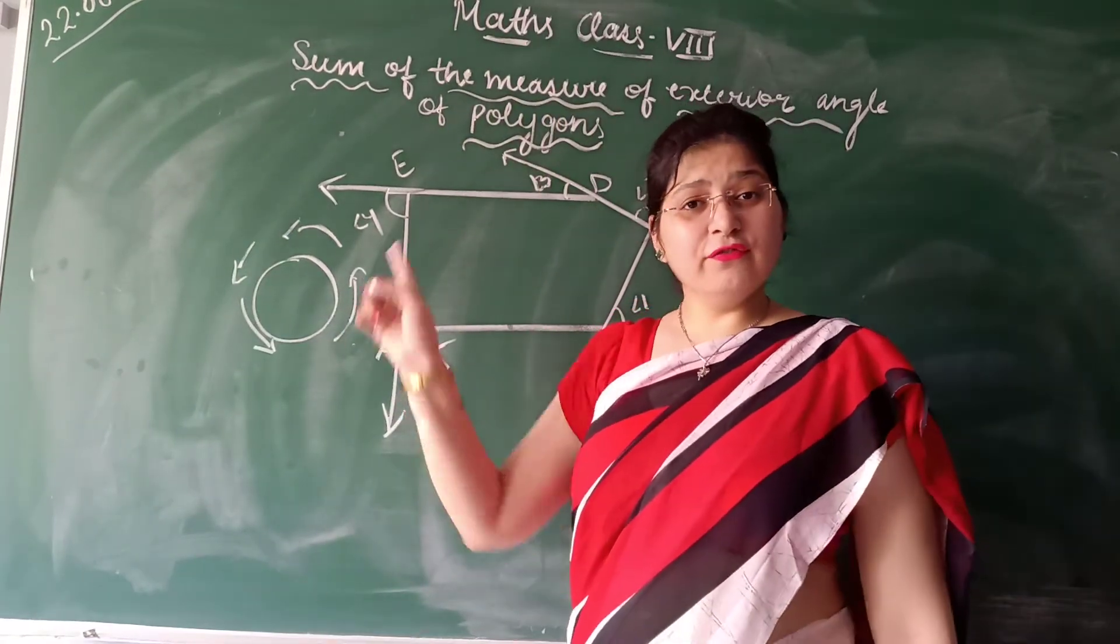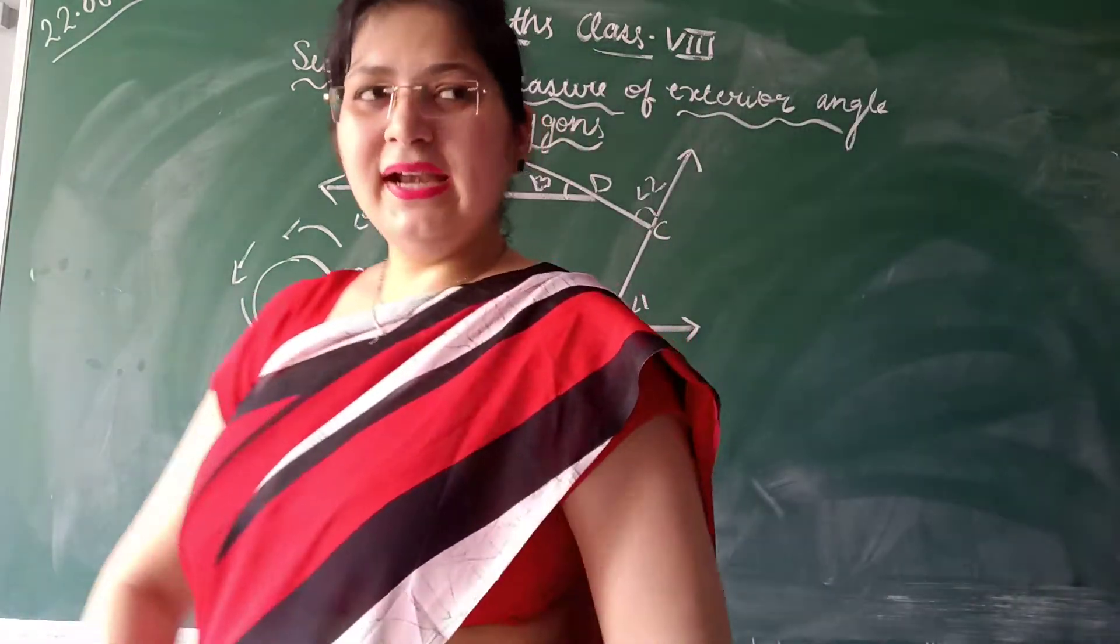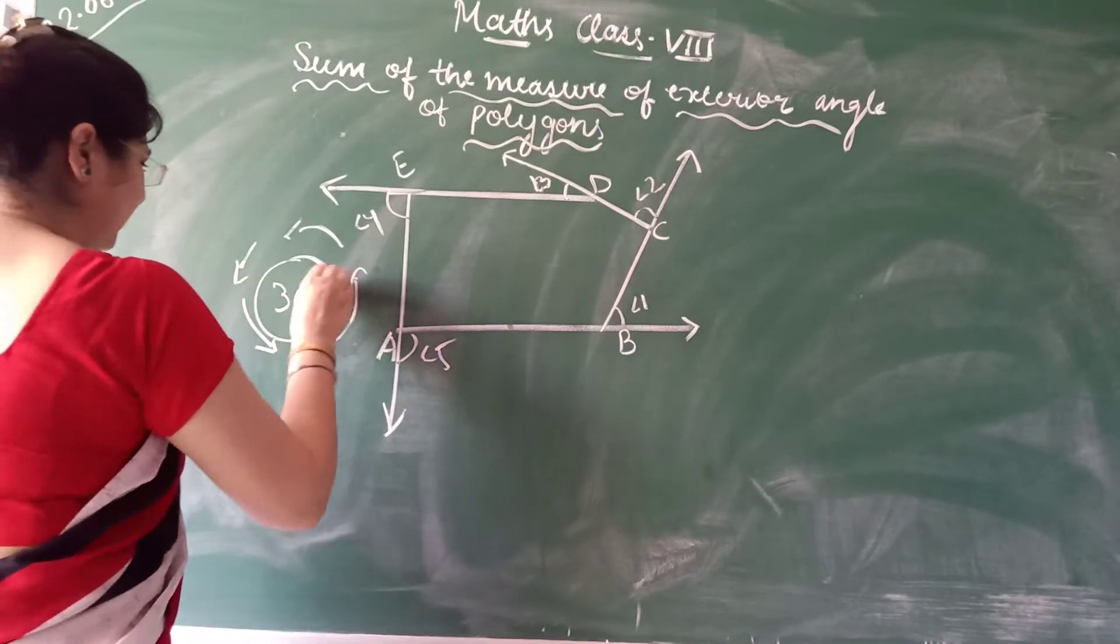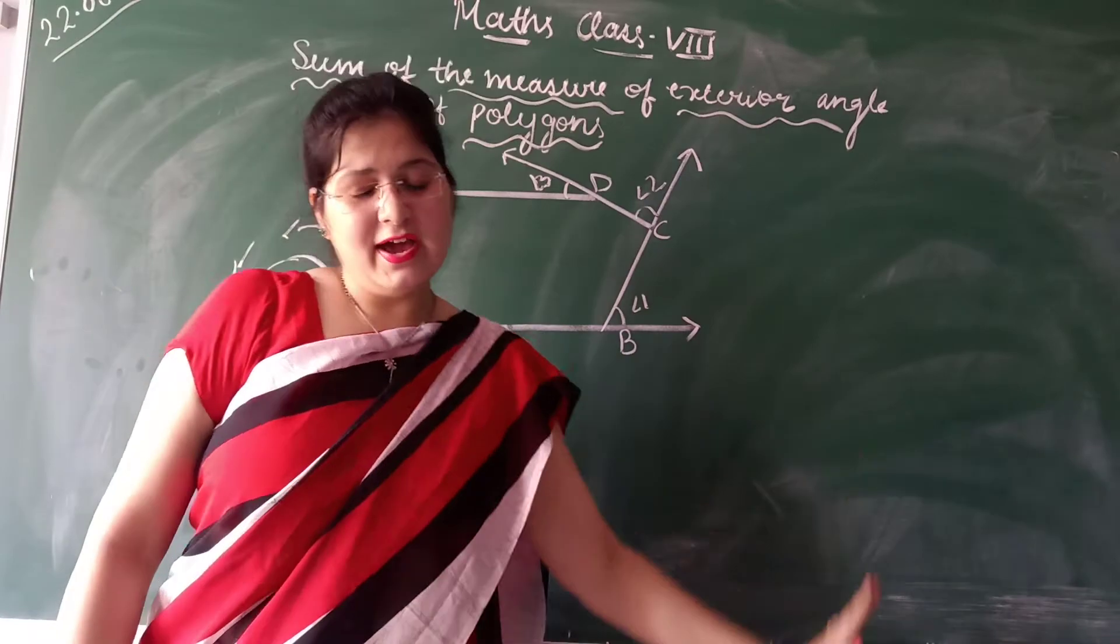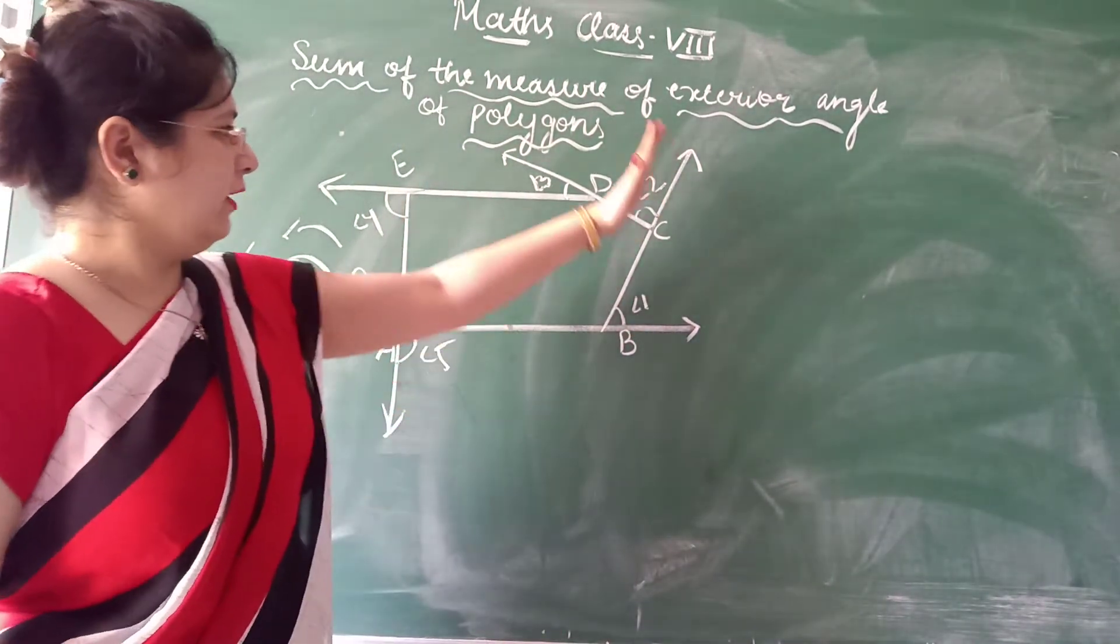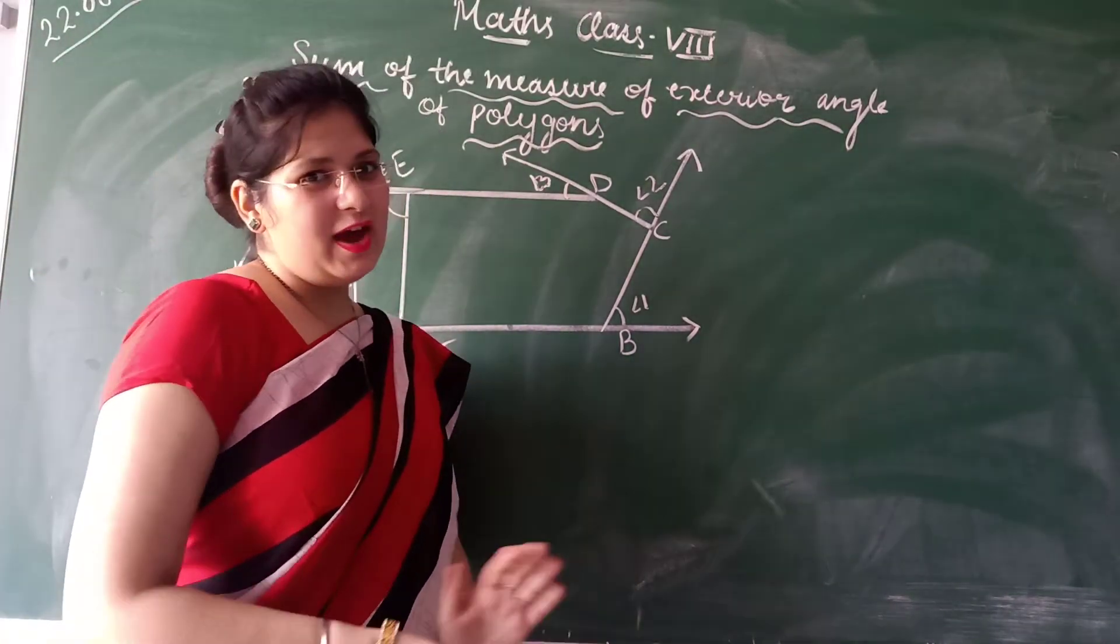I have taken full turn and full turn means you have studied in previous classes. When I make complete full turn, that is the angle of 360 degrees. So I have taken full turn, that means I have moved 360 degree angle. That means the sum of the measurement of all these angles is 360 degrees. So we have proved.